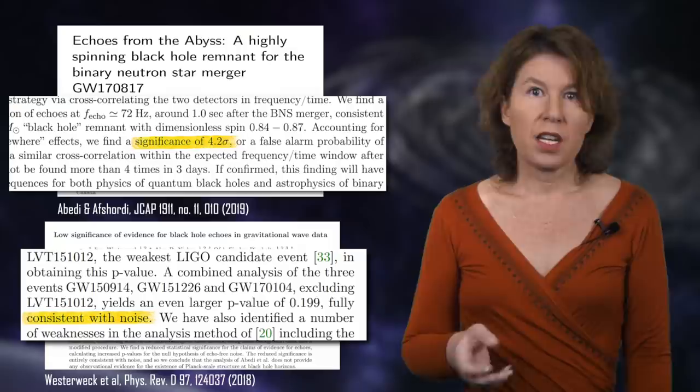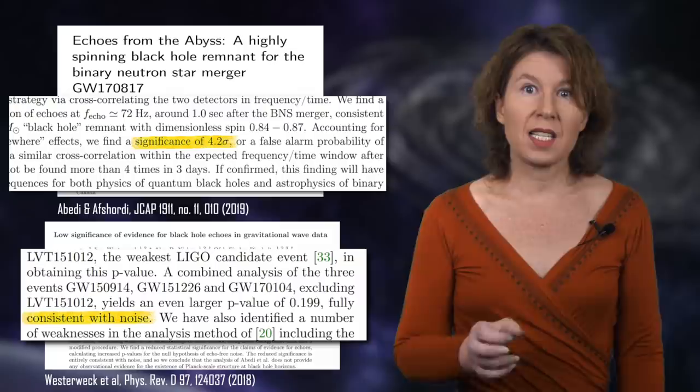There are a number of people who have looked for those. Nirjesh Afshordi and his group at Perimeter Institute, some people from the LIGO collaboration, and a few others. They actually did find a signal that looked like an echo in the previously mentioned gravitational wave event from August 2017.